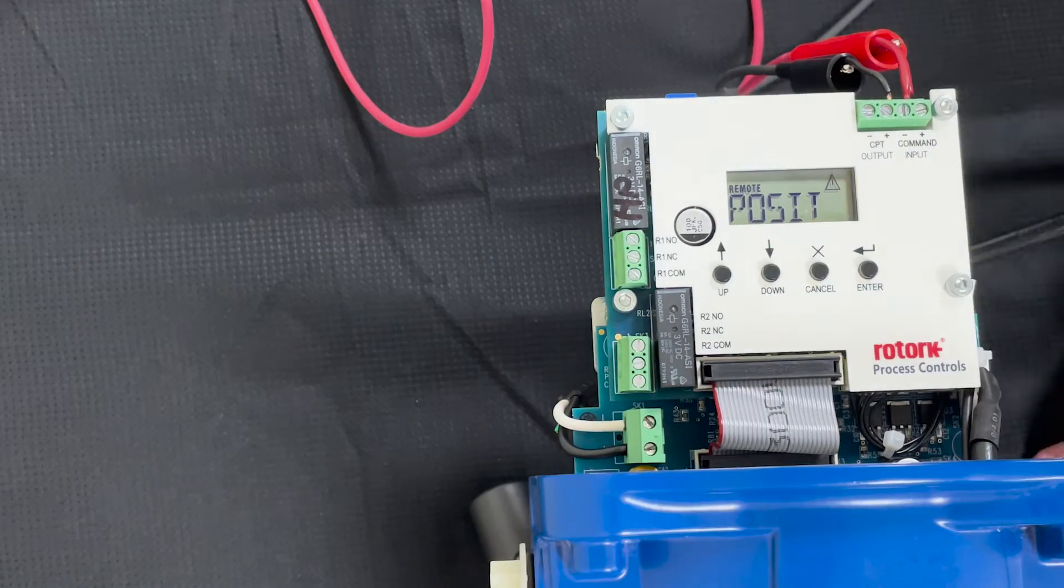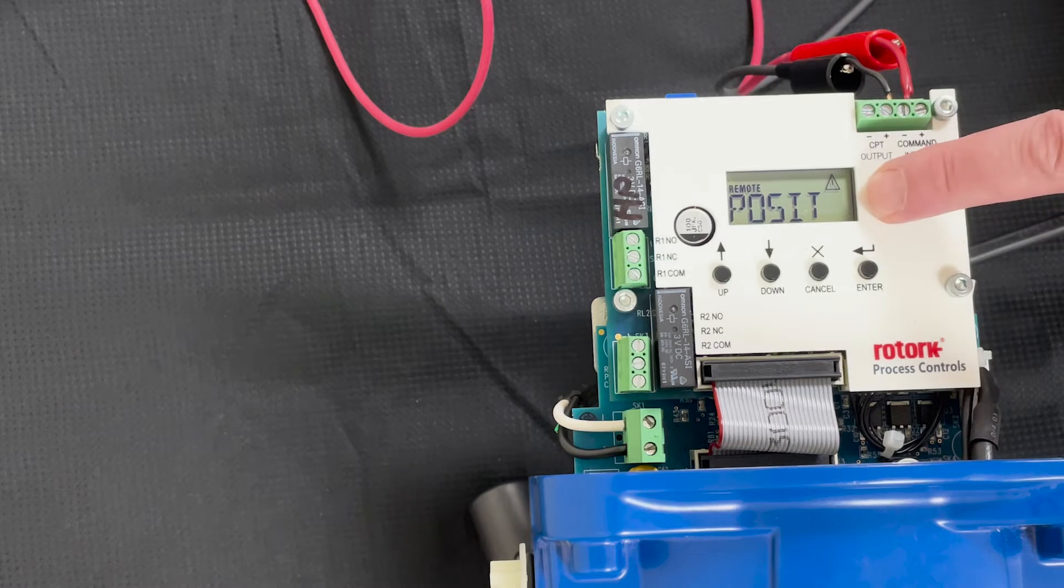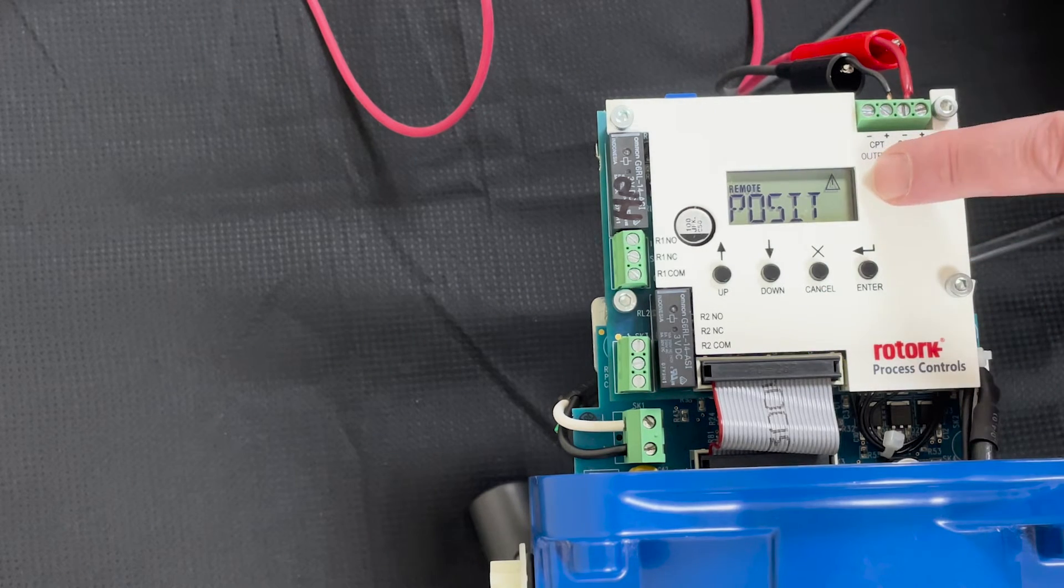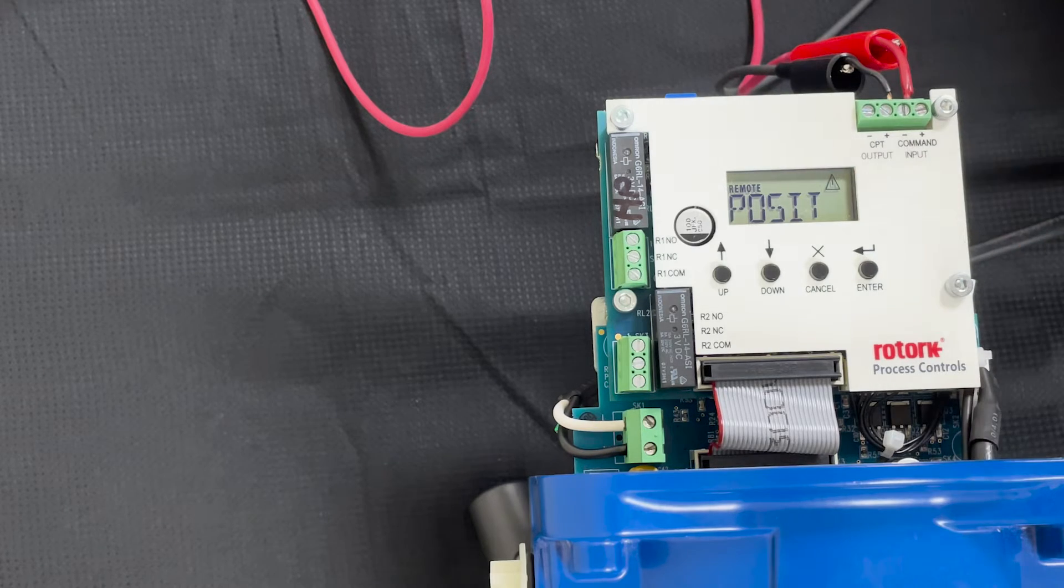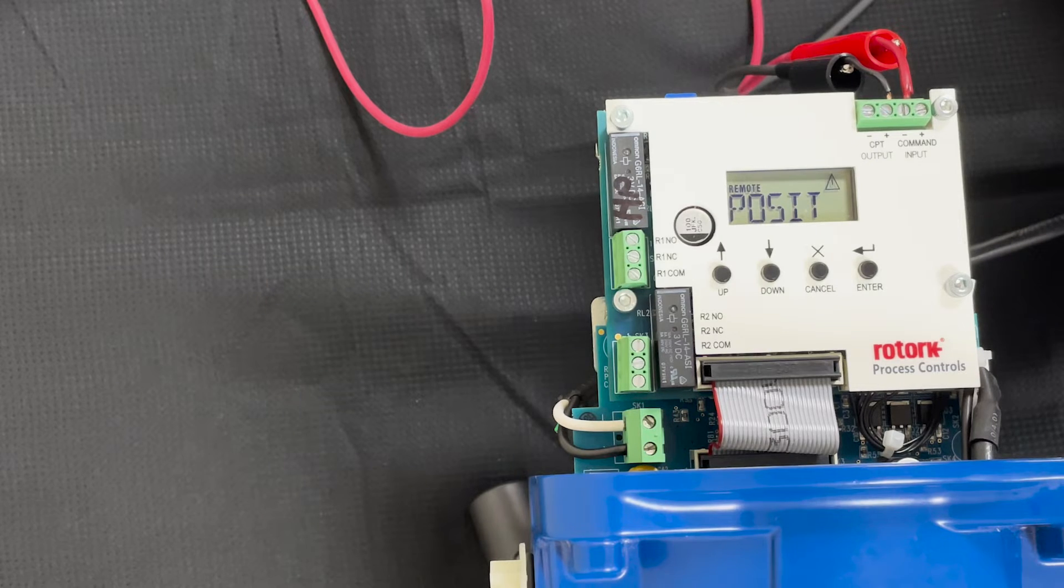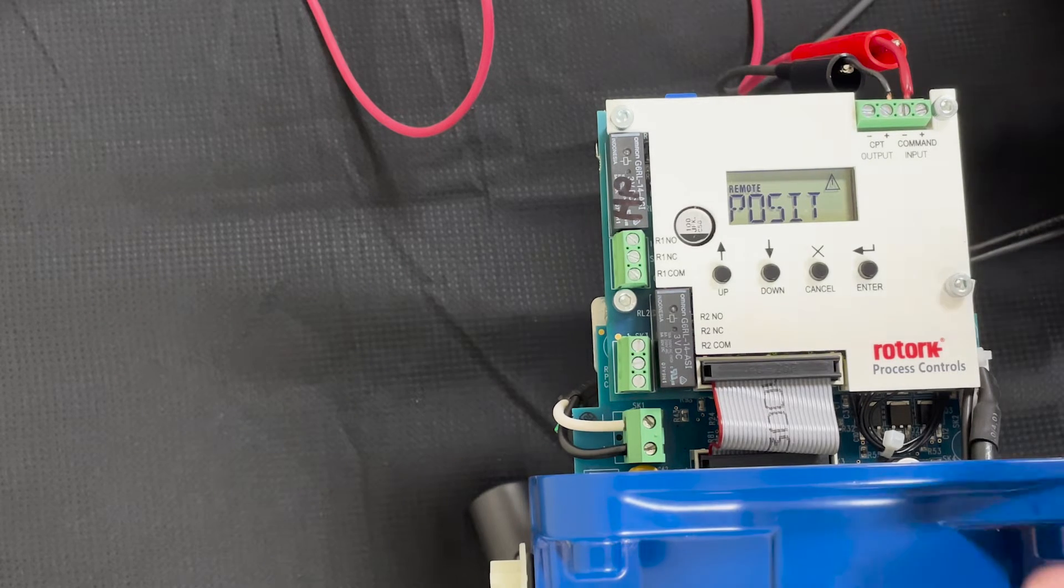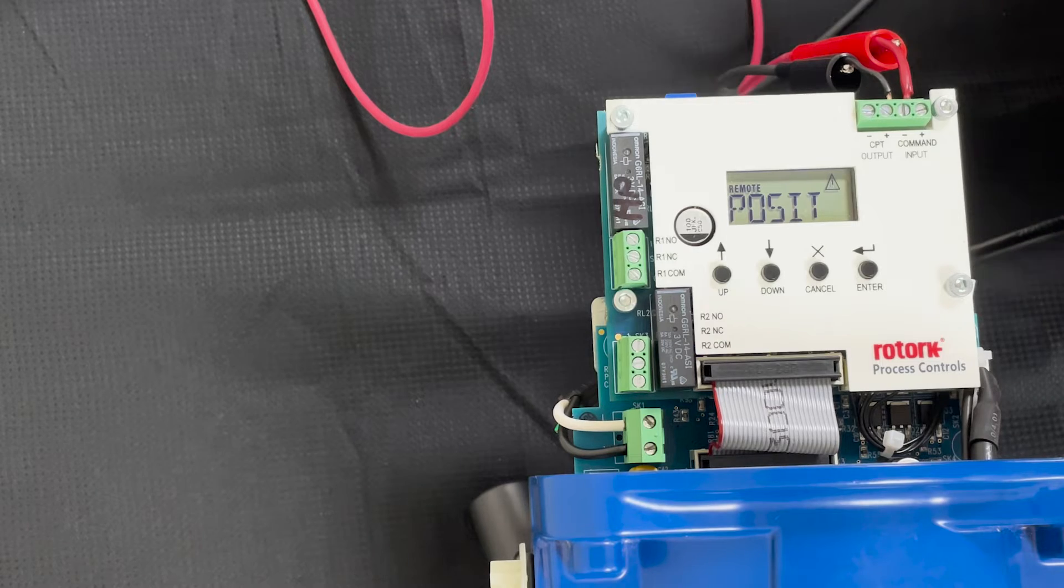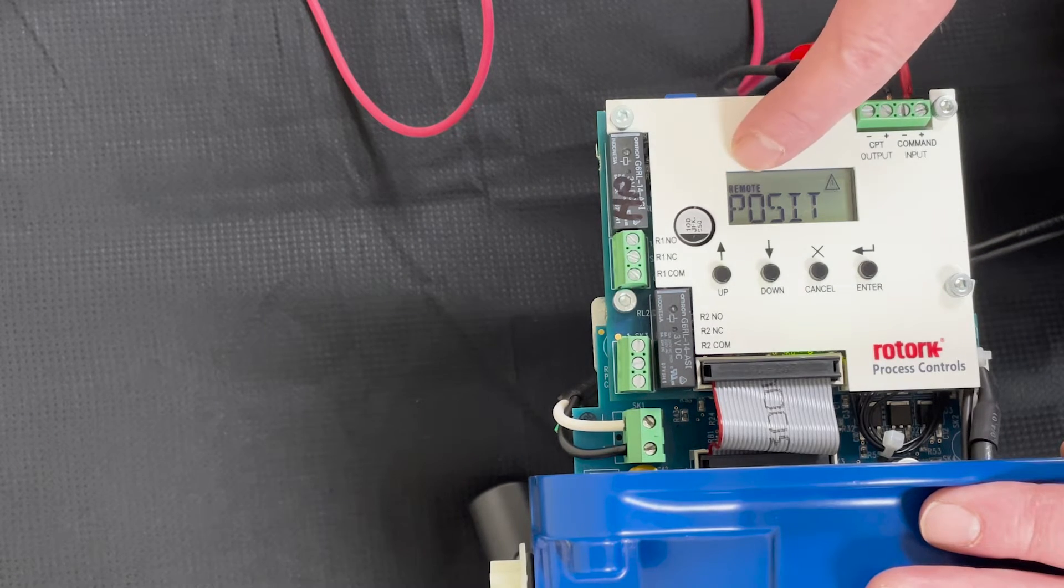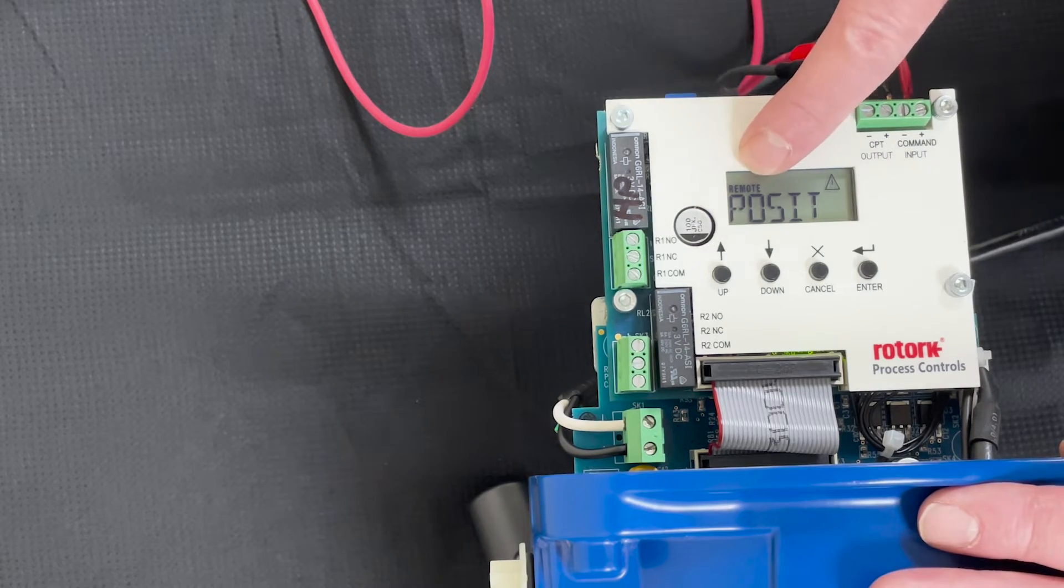When everything is powered up, you're going to see a display. It should be in the position display. Now when you're adjusting your analog to a certain point on your pump, you need to be in the local mode. You see it says remote. We've got to change that to local.